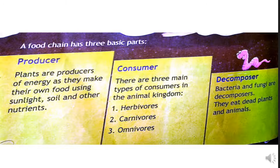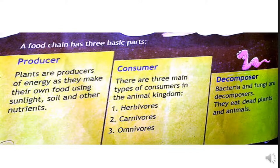Plants are producers of energy as they make their own food using sunlight, soil and other nutrients. There are three main types of consumers in the animal kingdom: herbivores — grass eating animals; carnivores — flesh eating animals; and omnivores — consumers who eat both plants as well as animals. The third part is decomposers: bacteria and fungi are decomposers — they eat dead plants and animals.